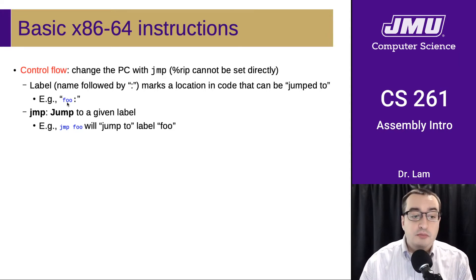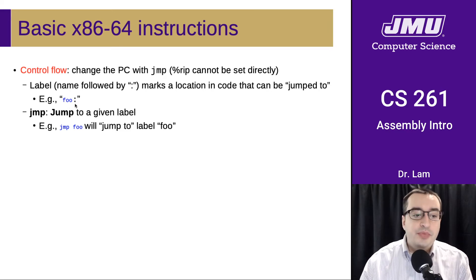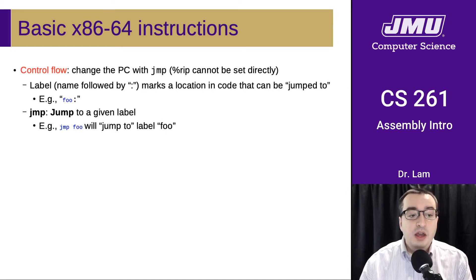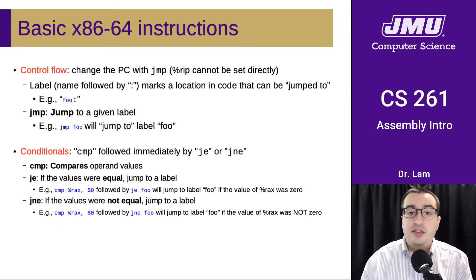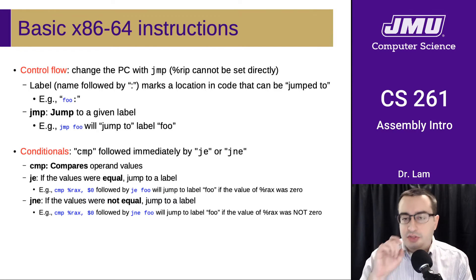You mark a location you might want to jump to using a label. A label consists of some name followed by the colon symbol. Then you can jump to that label using the JMP instruction. For instance, 'jmp foo' will jump to a label called foo — labels need to be unique. This is an unconditional jump, which is not quite as useful as a conditional jump that only happens if a particular condition is satisfied. There are a lot more details we'll cover about this later.